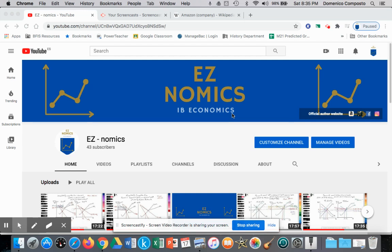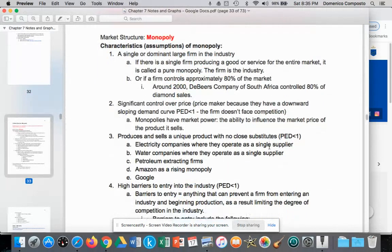Hello, this is Domenico Composto with EZnomics. Today we're going to graph and analyze a monopoly market structure as you would on an IB exam for paper one. Let's go ahead and go over the characteristics of this market structure.